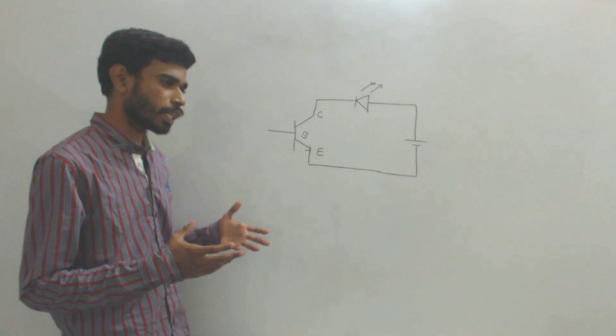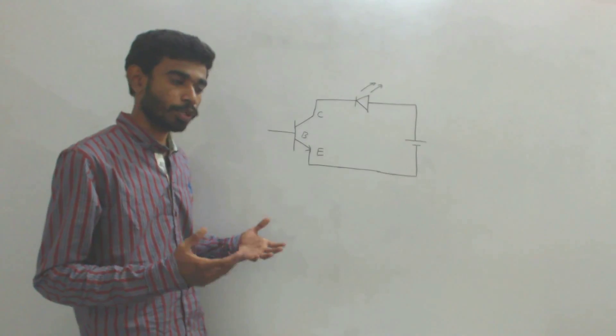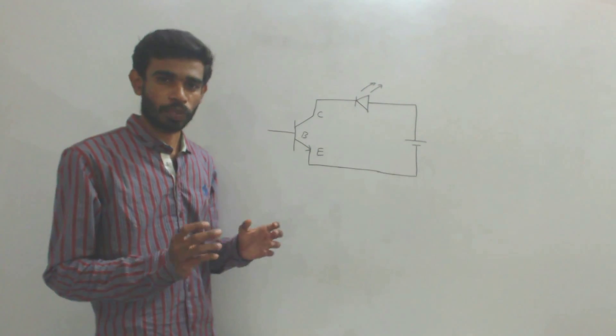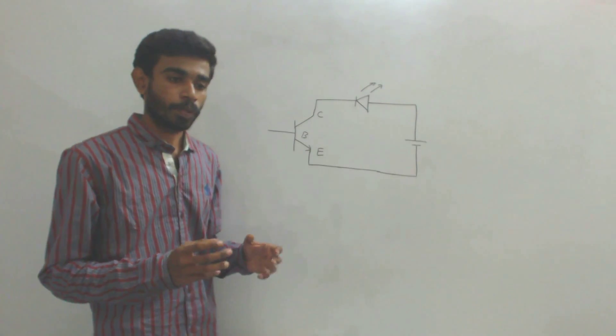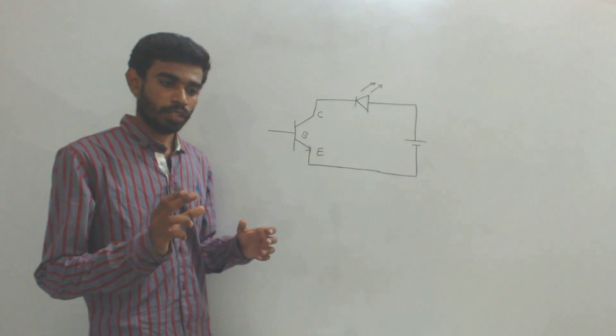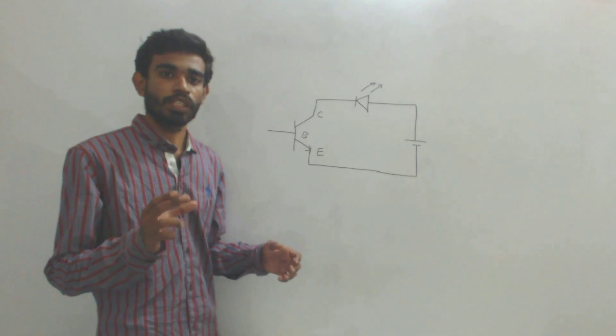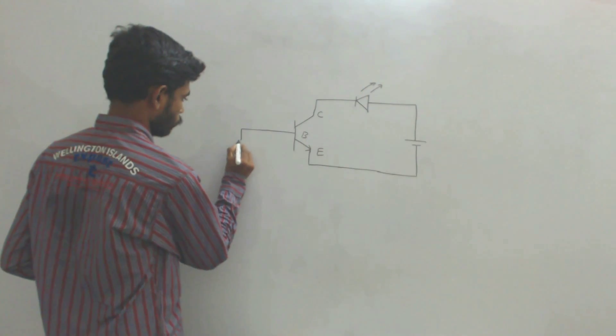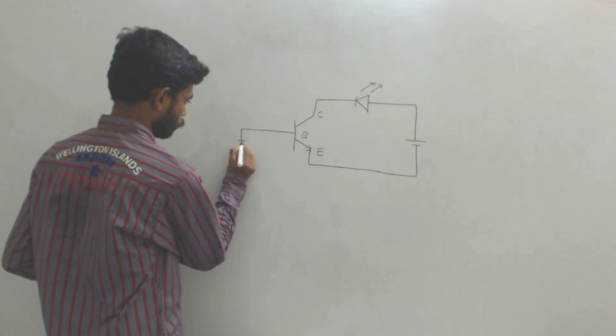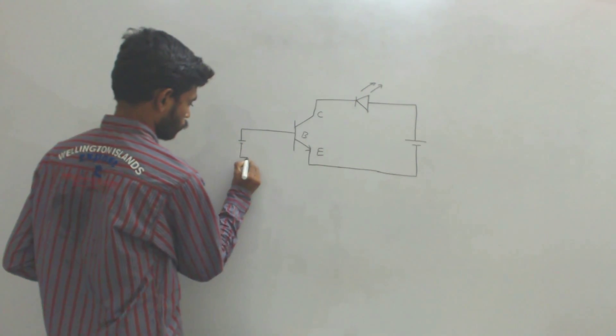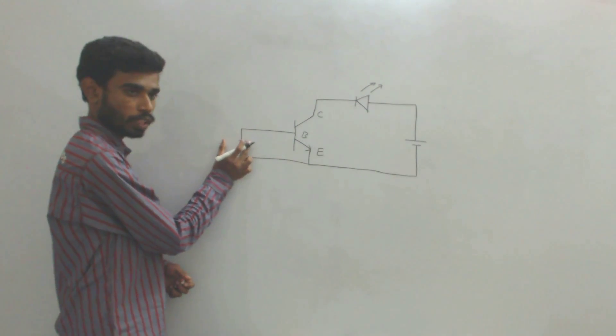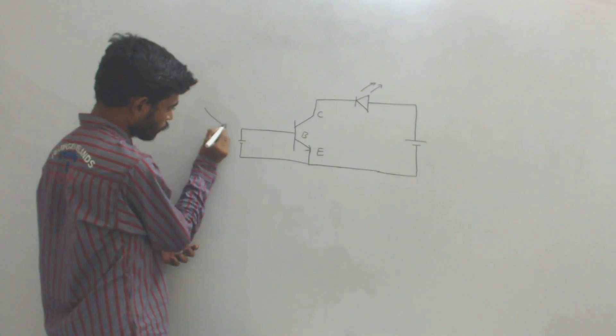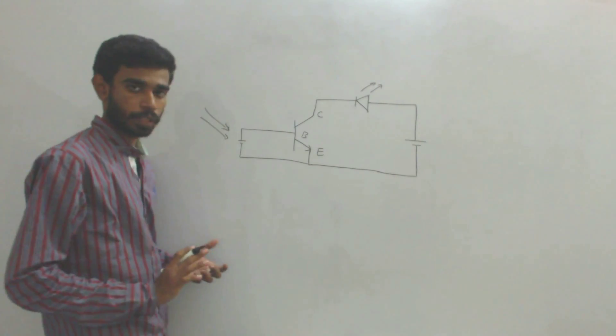That means consider a very small amount of current produced by a small amount of electricity produced by a sensor. Say it is a solar cell that produces very small amount of electricity when some light falls on it.